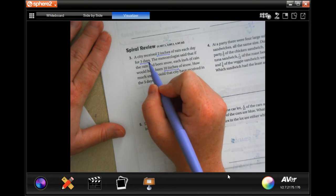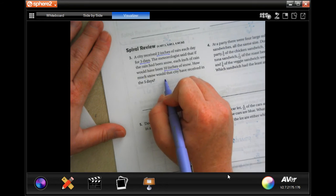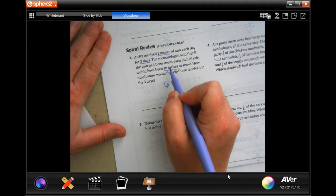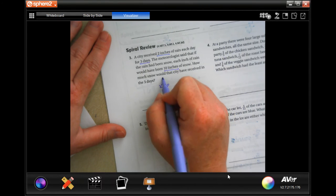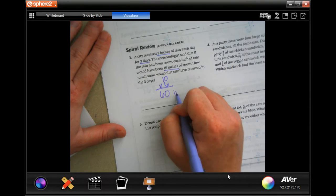So, 2 inches for 3 days. Each one of those 3 days is 2 inches. So, that's 6 inches, right? Now, each one of those inches would have been 10 inches if it were snow. 60 inches. True story, though.